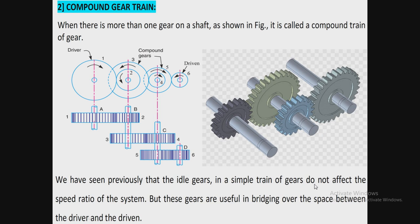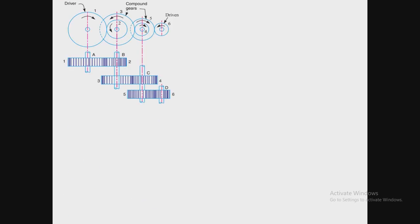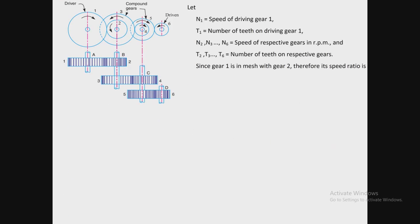We have previously seen that the idle gear in a simple gear train does not affect the speed ratio, but those gears are useful for bridging the space between the driver and driven. In this compound gear train type, the compound gears are also going to bridge the space between the driver and driven gear.